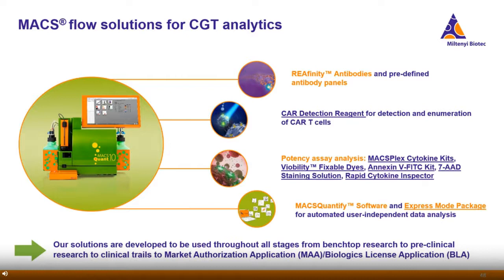To improve the reliability and reproducibility of your in-process control and quality control, and to speed up CAR T cell analytics, we developed several flow solutions. We offer REAfinity antibodies within expert antibody panels, CAR detection reagents to detect and enumerate CAR T cells, potency assays such as the MACSPlex cytokine kits, viability-flexible dyes, Annexin V staining kits, 7-AAD staining solutions, as well as the Rapid Cytokine Inspector for combined extracellular and intracellular staining. We also offer the MACSQuantify software and Express Mode packets for automated and user-independent data analysis.